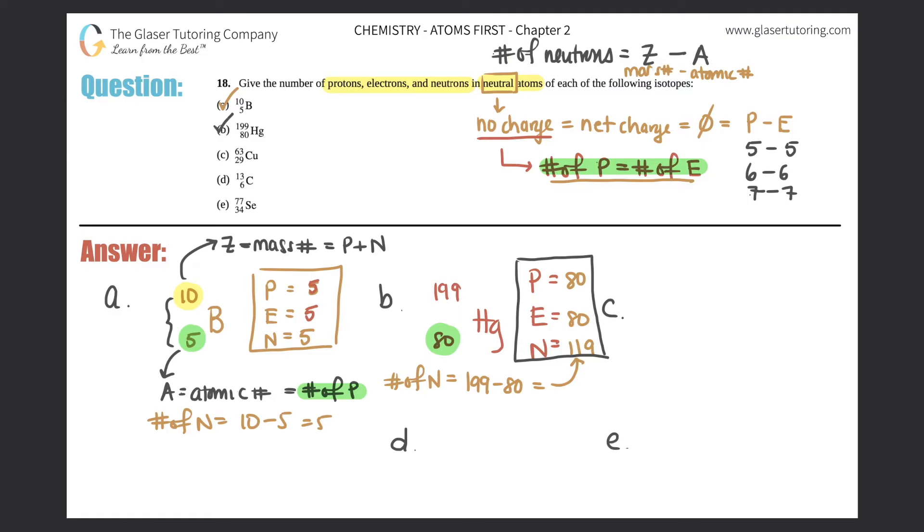C. We got copper, Cu-63 up top, 29 on the bottom. Protons is on the bottom. There's 29 protons. That's the atomic number. It's neutral. So the number of electrons should equal the number of protons, 29. And now I have a mass number of 63 and an atomic number of 29. So if we just do 63 minus 29, we will get our neutron answer. 63 minus 29 is 34. Box that answer off. Look how quick this is going now, guys. Awesome job. That's C.